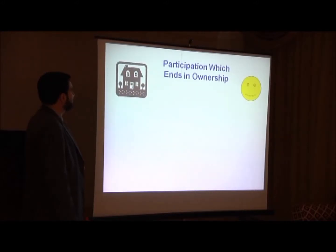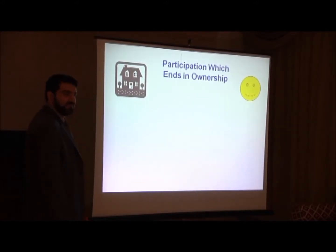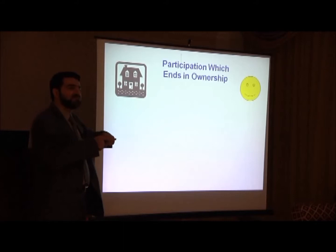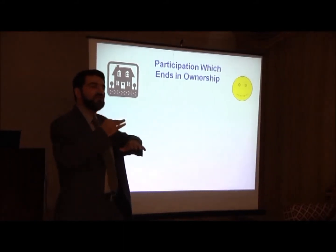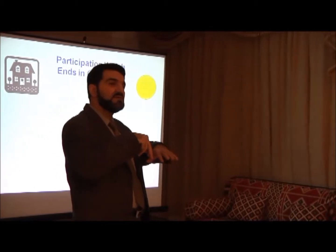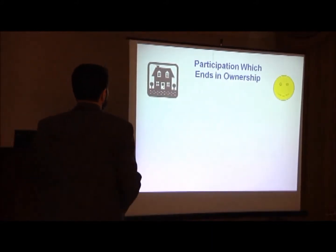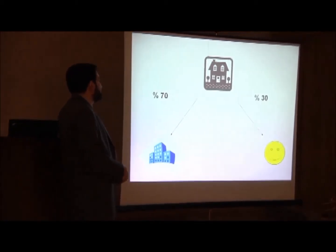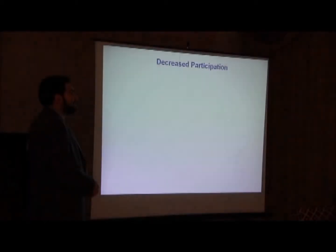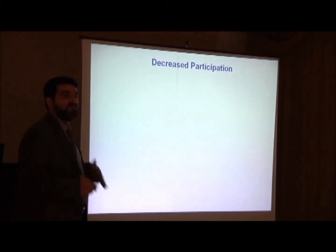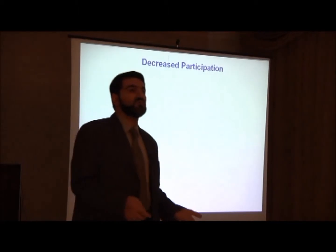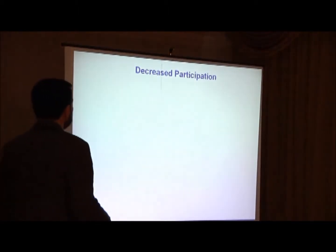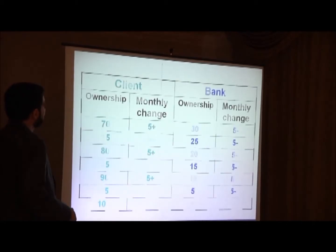For example: you need to buy a house but don't have enough cash. You participate with the bank and pay from the return of the asset, buying it in portions from your partner — participation ending with ownership, also called diminishing partnership. Another type: you own an asset and need to develop it, you need more money, so the bank comes and becomes your partner — decreasing partnership.